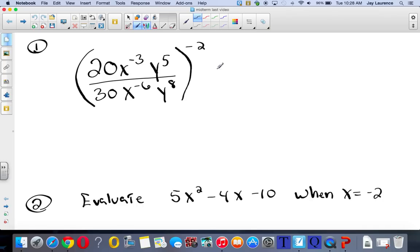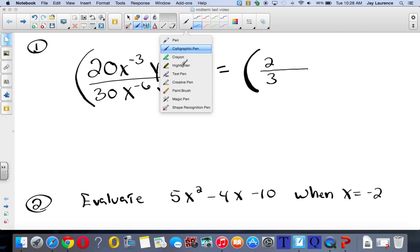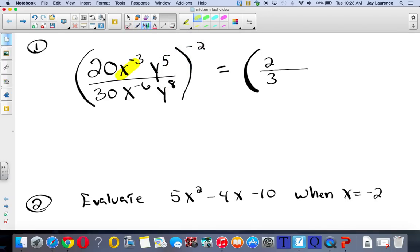All right, hopefully you've tried it already. Here comes my solution. First thing I'm going to do is simplify inside the quantity. And so I see that 20/30 is the same as 2/3. Yeah, I just simplified the fraction. Now these x to the negative 3rd and x to the negative 6th, they're going to move, right? Okay, so we're going to send this down, and we're going to send him up.